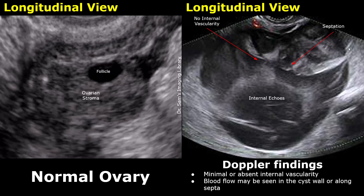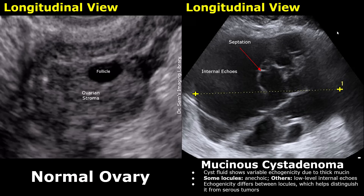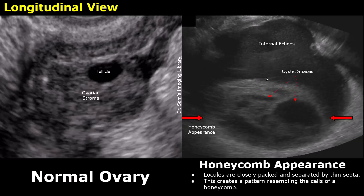Let's look at a few more images of mucinous cystadenoma. This cystic mass is multi-loculated and has internal echoes, although some locules appear anechoic. Some locules are closely packed and separated by thin septations, so they may create a honeycomb pattern. This locule has low-level internal echoes. This was a mucinous cystadenoma.